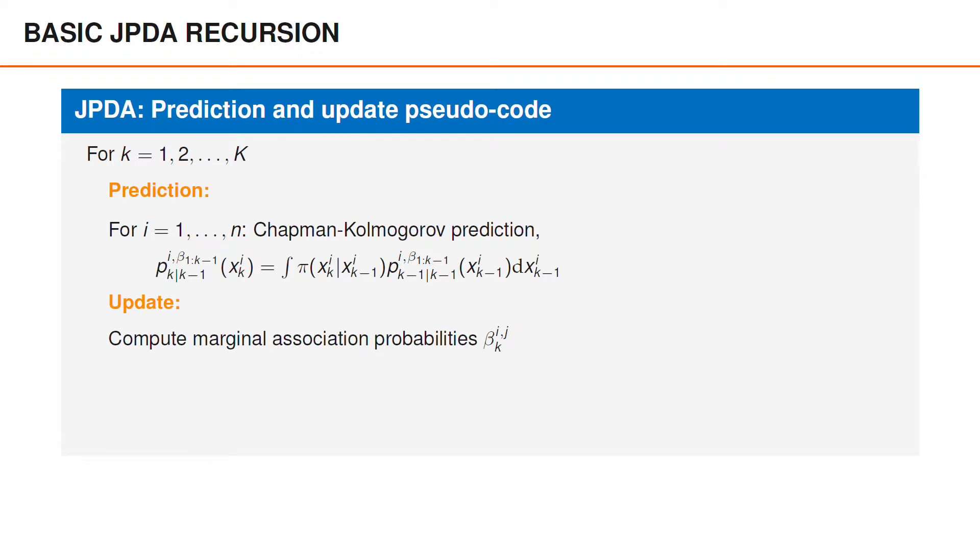Next, in the update we start by computing the marginal association probabilities, and given the association probabilities for each object, we compute the merged marginal posterior. We will show later what the merged mean and covariances are if we have Gaussian object densities and linear Gaussian measurement model.